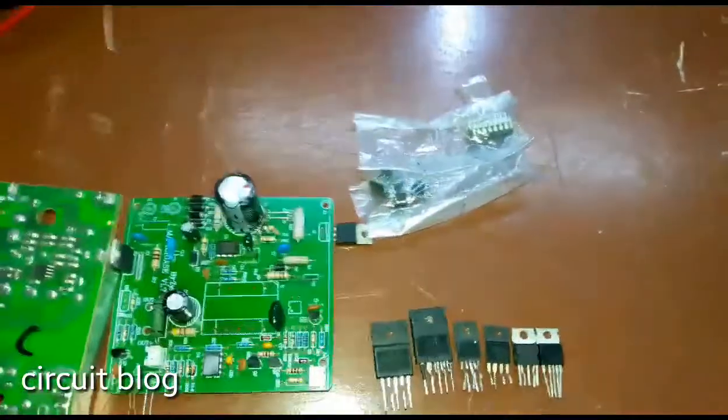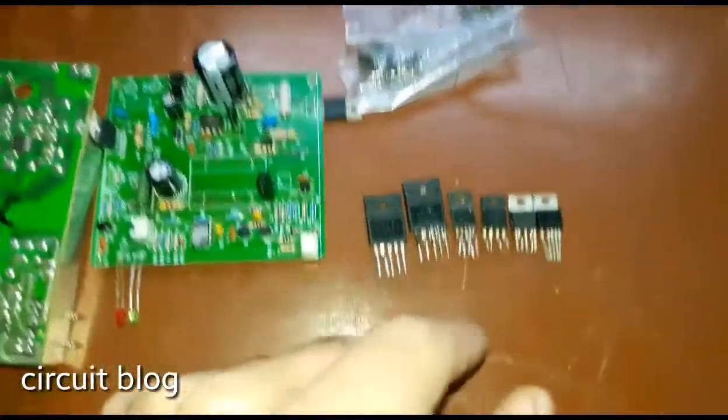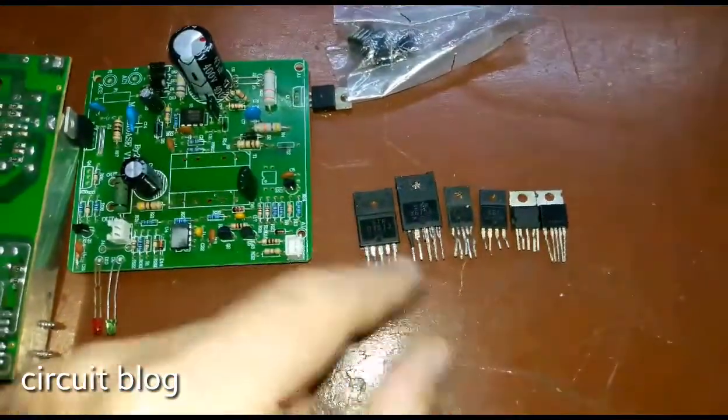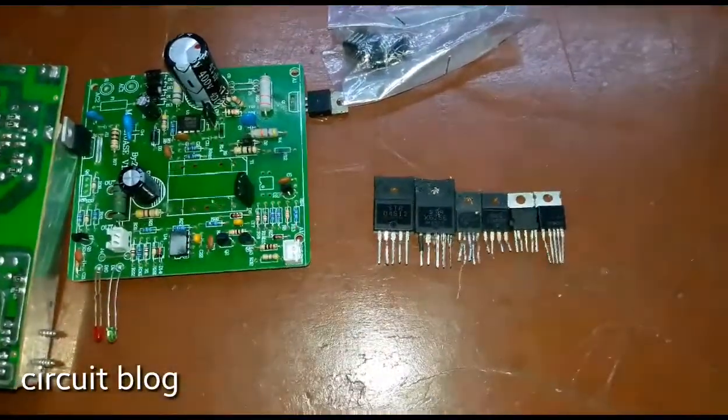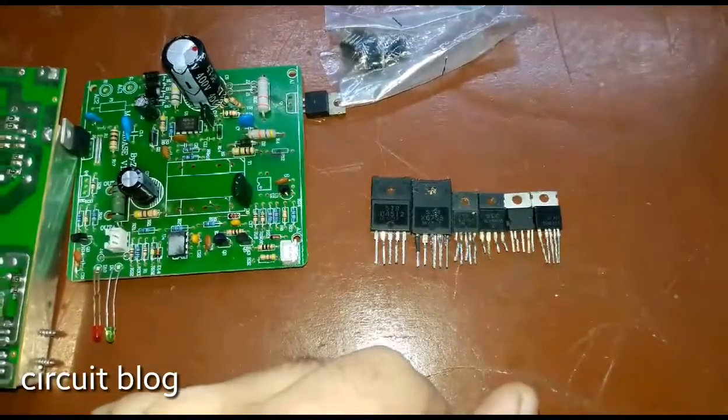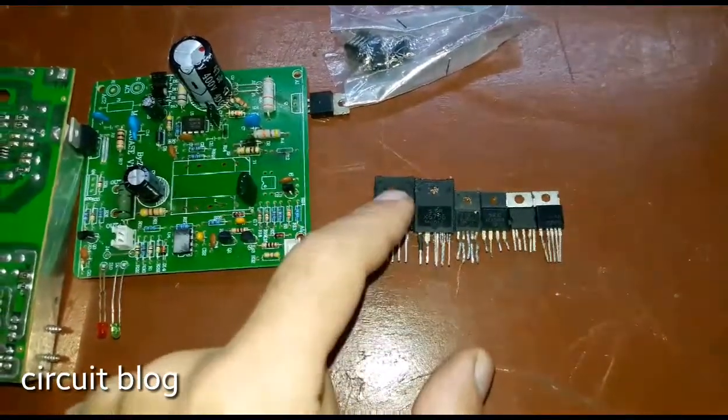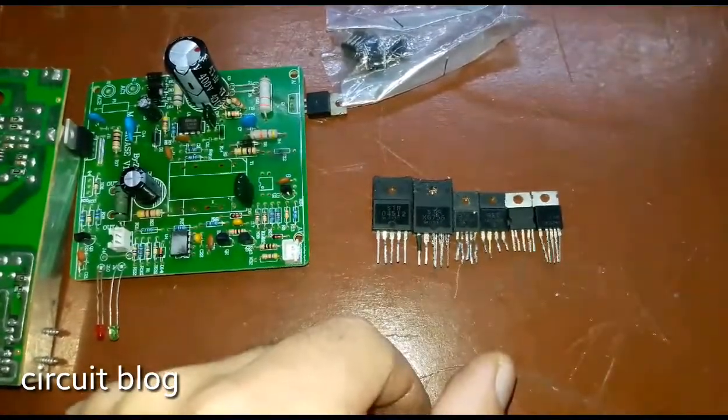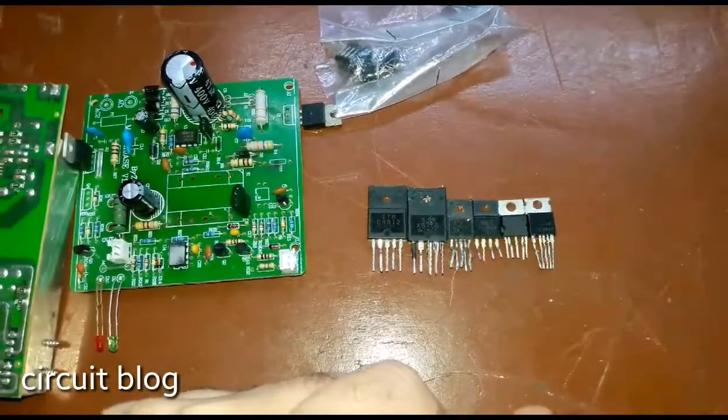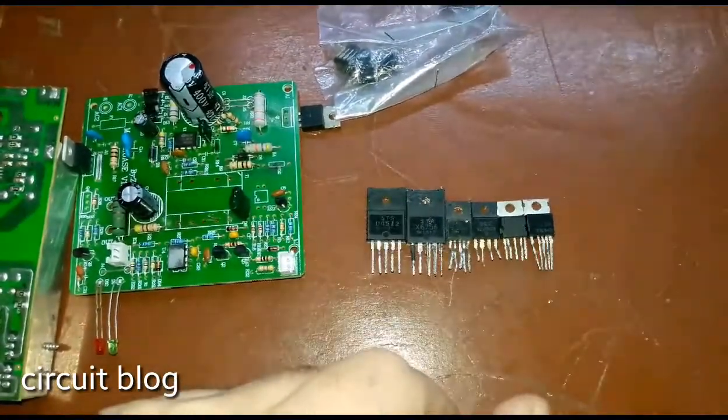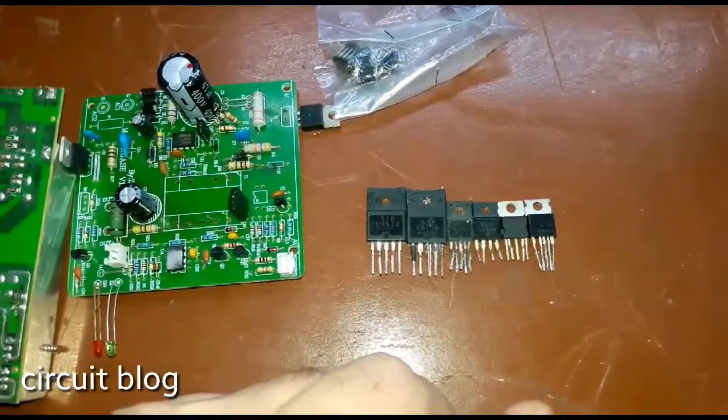So here on this table we can see that I have numerous types of driver ICs. These are basically a PWM control IC or the driver IC and the driver transistor that drive the chopper transformer.